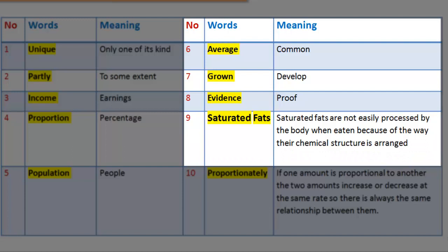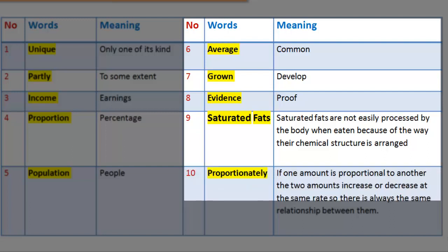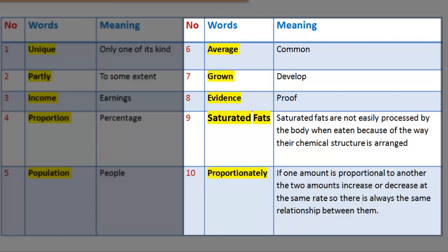9. Word: Saturated Fats — Meaning: saturated fats are not easily processed by the body when eaten, because of the way their chemical structure is arranged. 10. Word: Proportionally — Meaning: if one amount is proportional to another, the two amounts increase or decrease at the same rate, so there is always the same relationship between them.